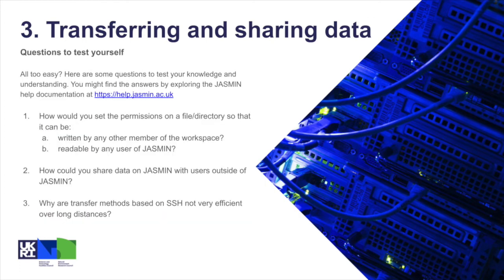If you get through all that with time to spare, or you want to challenge yourself, here are some further questions to test your knowledge — you might find the answers by looking at the Jasmine documentation, and for some of them you might need to look a little bit further. First, how would you set the permissions on a file or directory so that it can be (a) written by any other member of the same workspace, or (b) readable by any user of Jasmine? Question two: how could you share data on Jasmine with users outside of Jasmine? Question three: why are transfer methods based on SSH not very efficient over long distances?